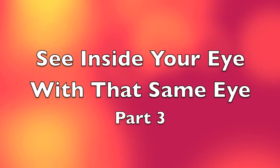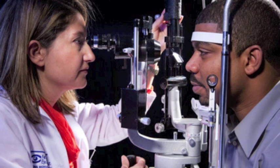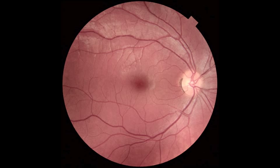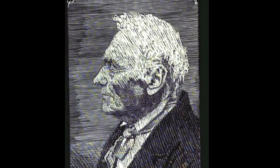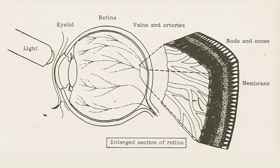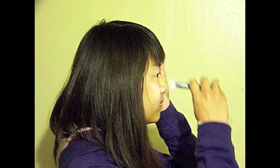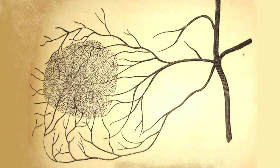Have you ever seen a glimpse of branching lines in your vision, perhaps while your ophthalmologist was shining a light in your eye? What you saw might have been the shadows of blood vessels on the surface of your retina. In this video I describe some of the history and science of this phenomenon and show how to get remarkably stable and detailed views. I also briefly describe two other related phenomena.